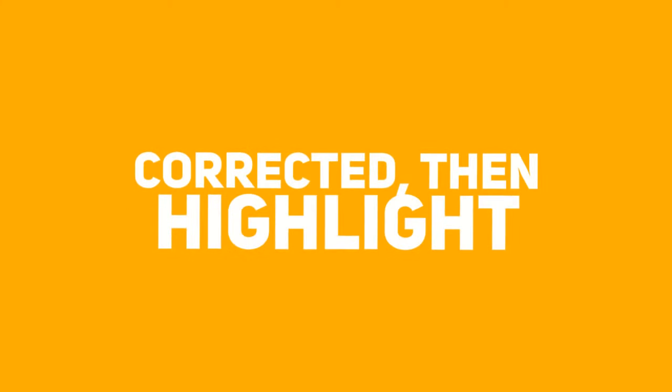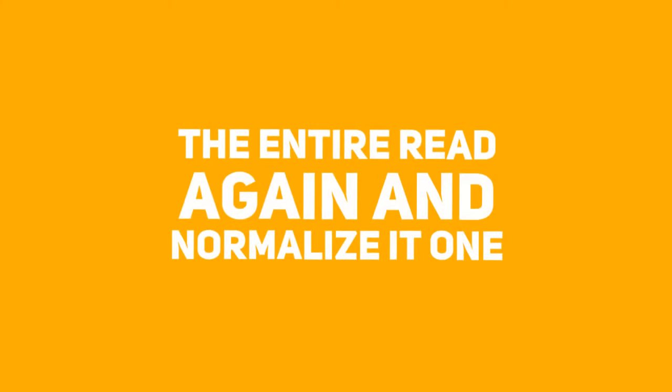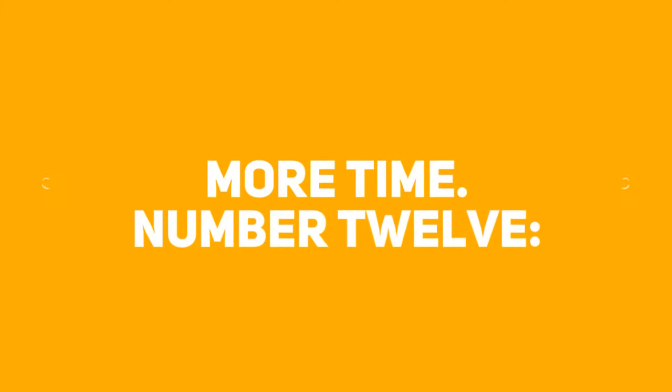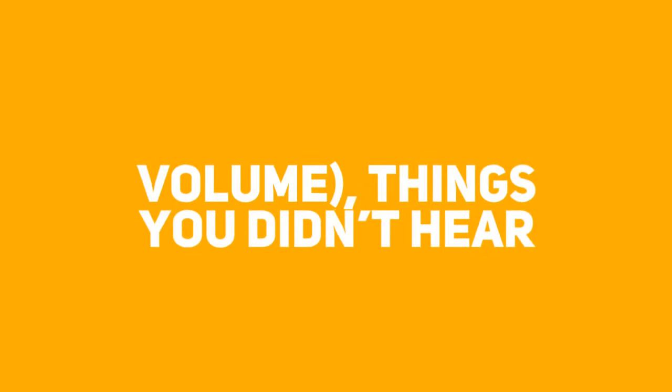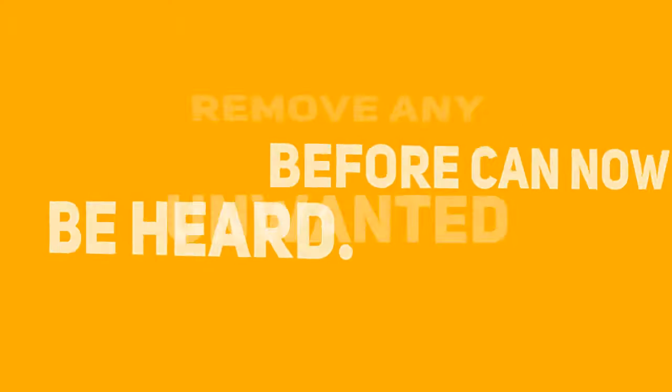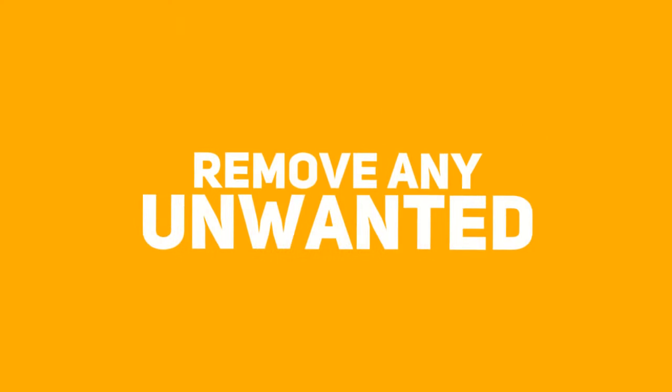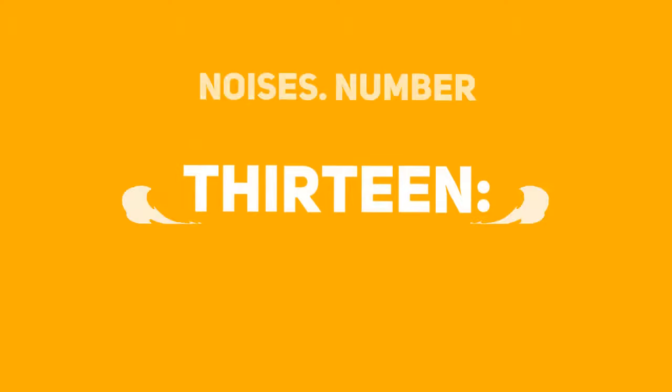Number 11: Once all the radical peaks are corrected, highlight the entire read again and normalize it one more time. Number 12: Listen very carefully to the read. Sometimes when you normalize and raise up the volume, things you didn't hear before can now be heard. Remove any of the unwanted noises.